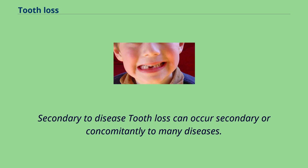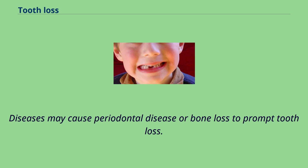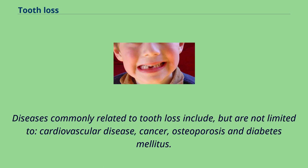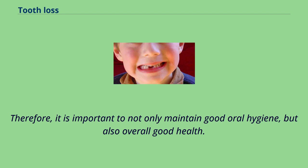Tooth loss can occur secondary or concomitantly to many diseases. Diseases may cause periodontal disease or bone loss to prompt tooth loss. Consequently, periodontal disease may cause increased infection, which may predispose a person to other diseases. Diseases commonly related to tooth loss include, but are not limited to, cardiovascular disease, cancer, osteoporosis, and diabetes mellitus. Therefore, it is important to not only maintain good oral hygiene, but also overall good health.